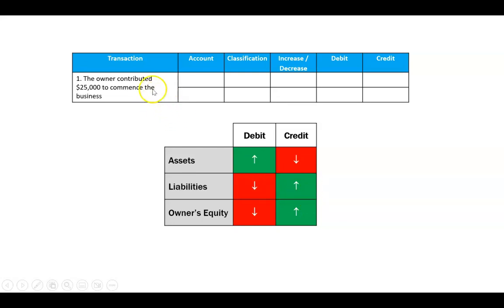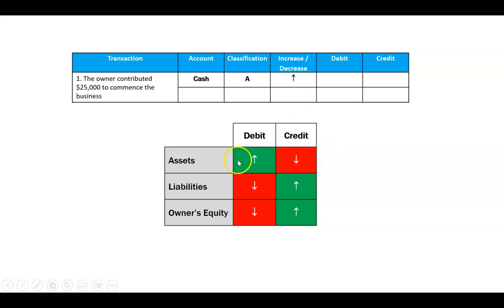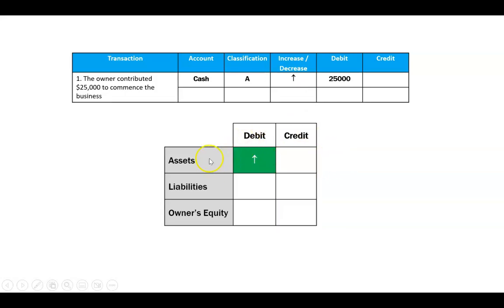Let's do that one thing at a time. The owner contributed $25,000 to commence the business. The business is going to have a new asset called cash — or bank, cash or bank, whatever. That's an asset, and from the business's perspective that asset is going to go up. The rule says: is that going to be a debit or a credit? What does my rule say? It says when an asset goes up, that should be a debit.